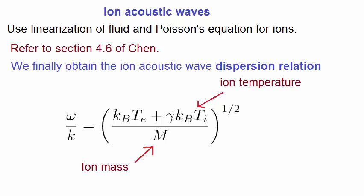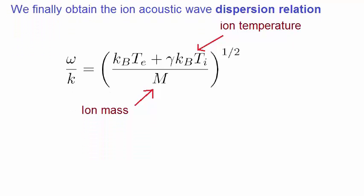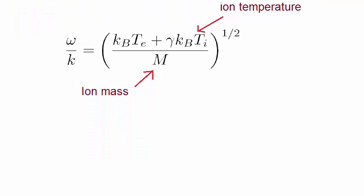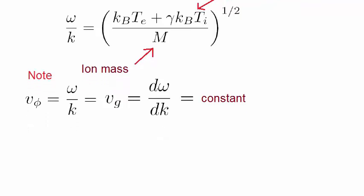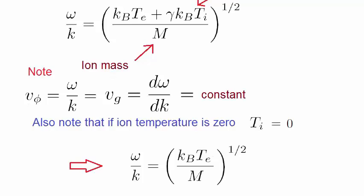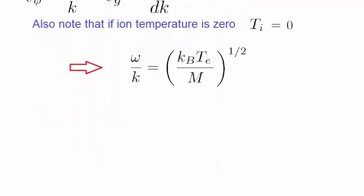Note that in contrast to the dispersion relation of the electrons, here we find that the phase and group velocities are both equal and constant. Also interestingly, even if the ion temperature was set to zero, we find that the dispersion relation is dominated by the electron temperature.